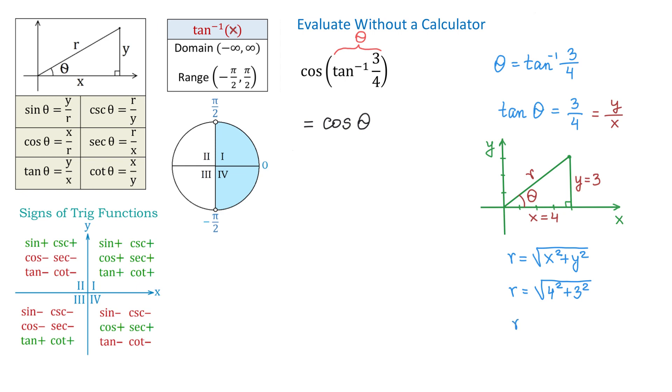We will write that r equals 5. Now, let's go back to cosine of theta. By definition, we said that cosine of theta is x over r. In our problem, x is 4 and r is 5. And 4 over 5 is the value of the expression cosine of inverse tangent of 3 over 4.